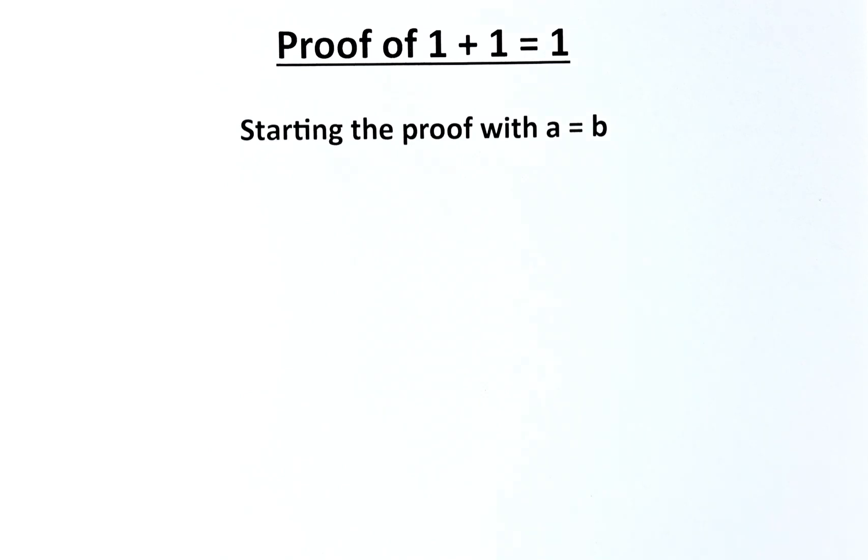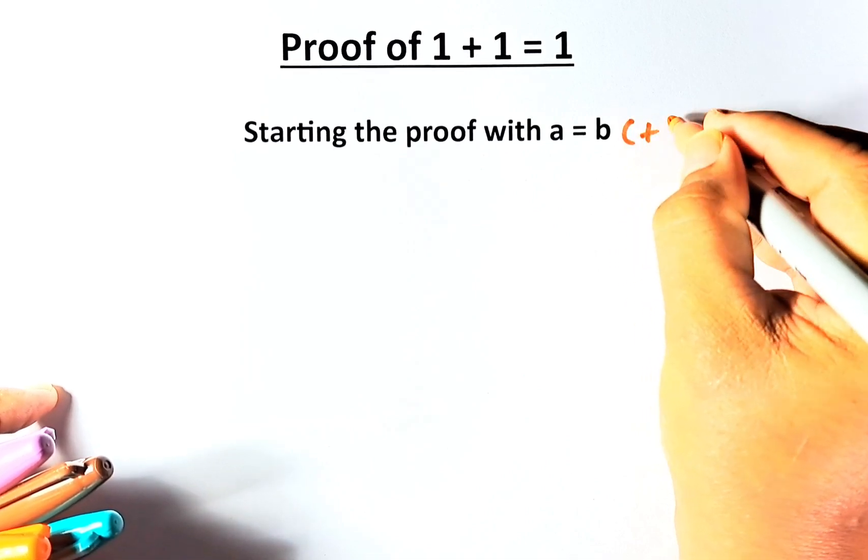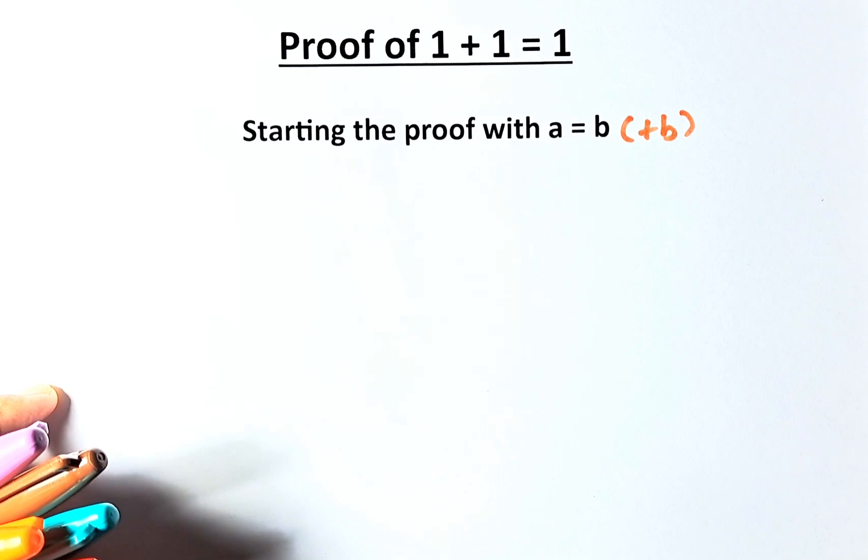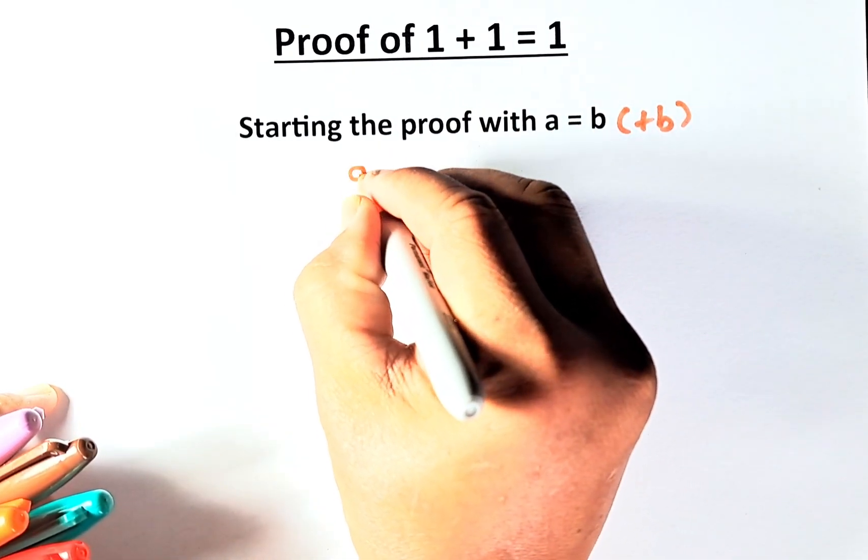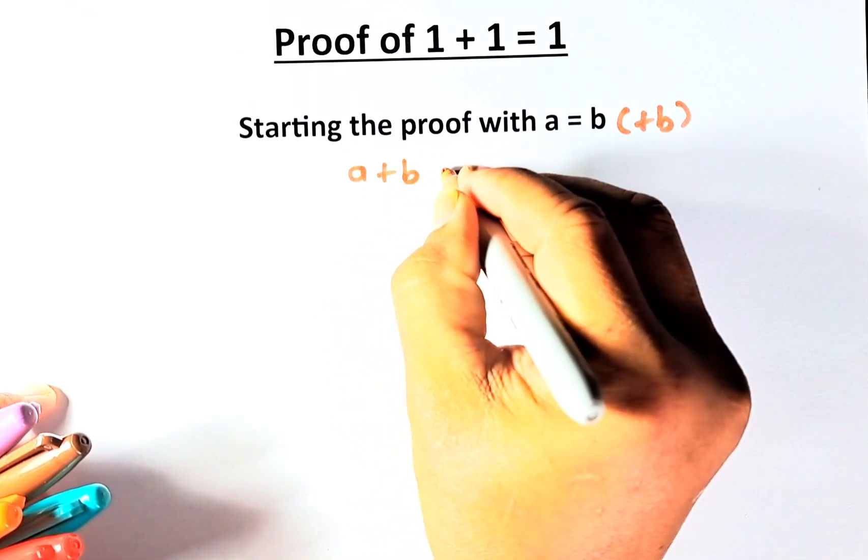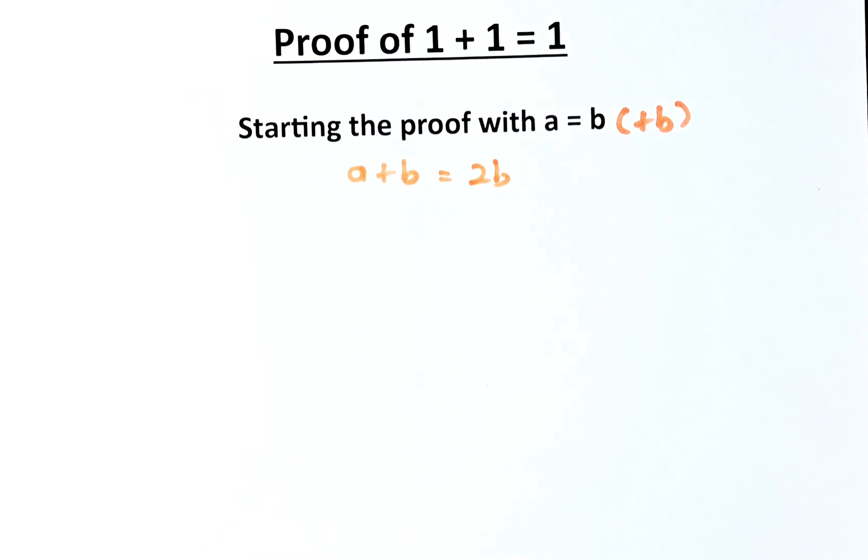So now we're going to start this proof by stating that a equals to b. Let's assume that a equals to b. The first step, we are going to add b on both sides of the equation. So when we add b, that equation now is going to be a plus b equals to 2b, because b plus b is 2b. So far so good.